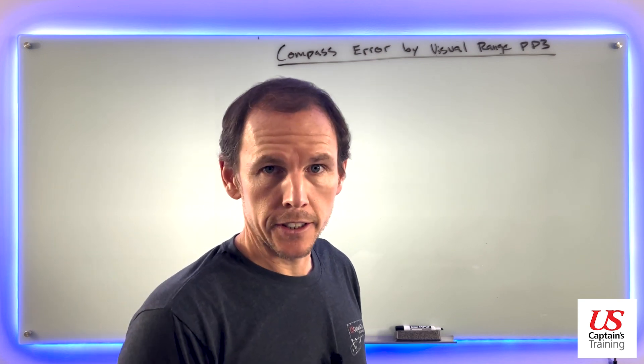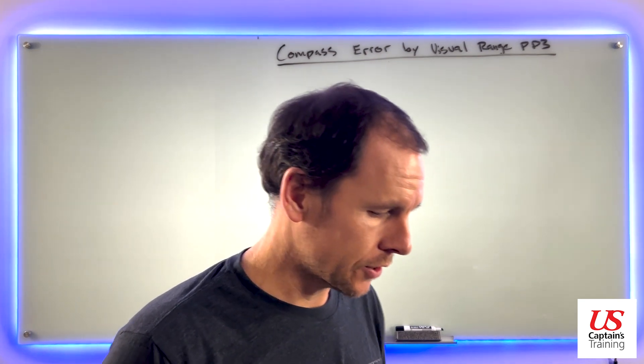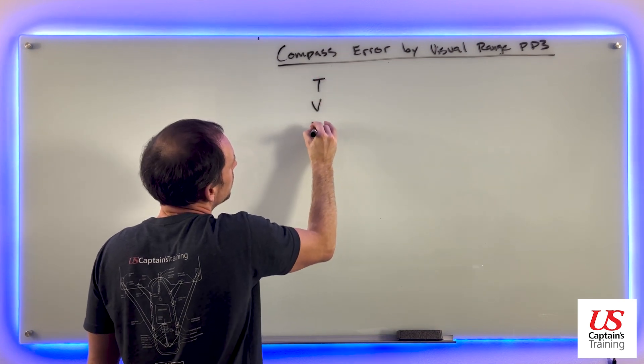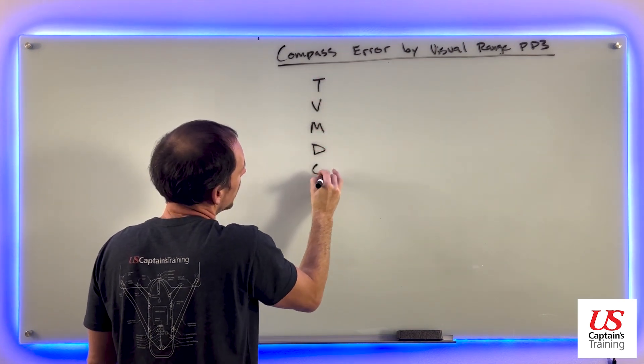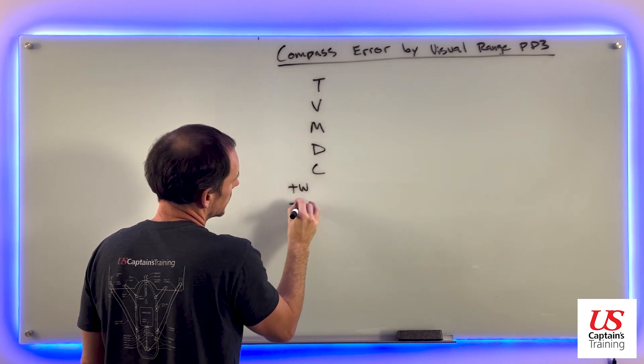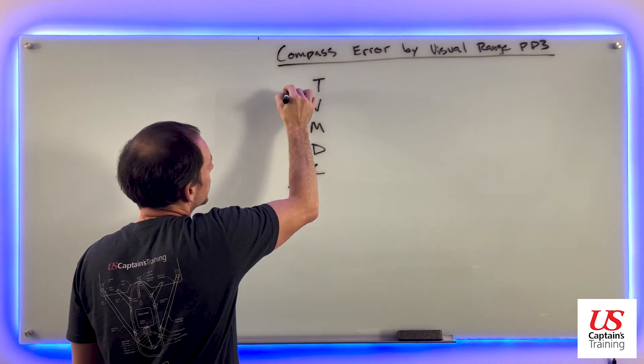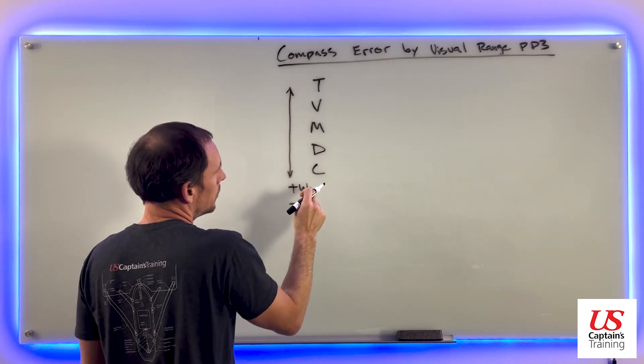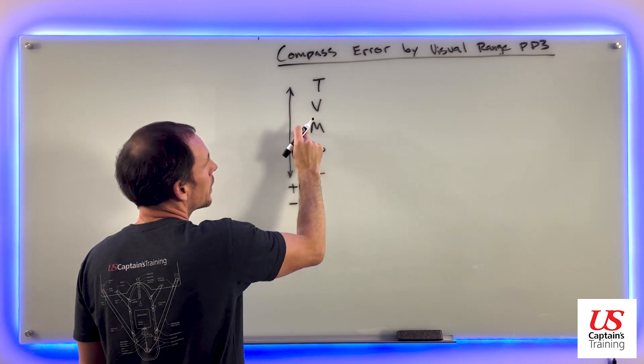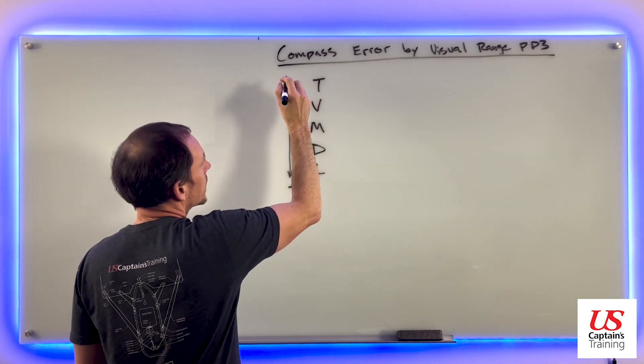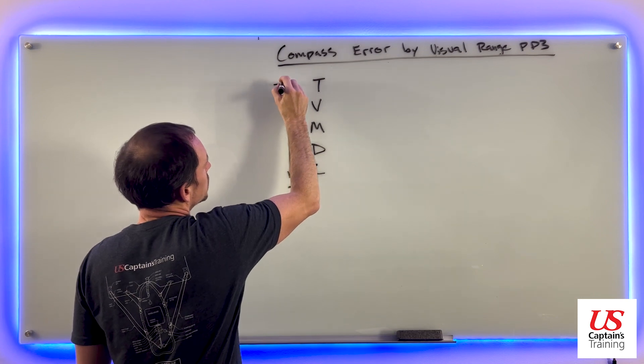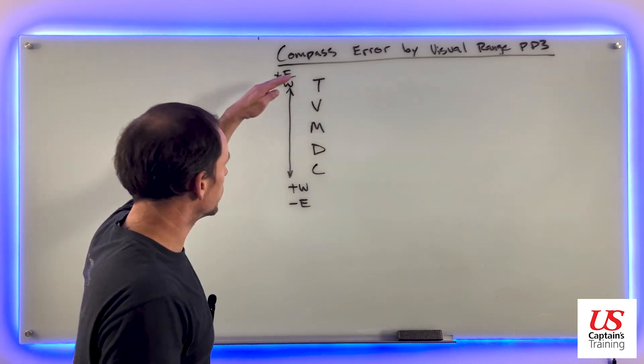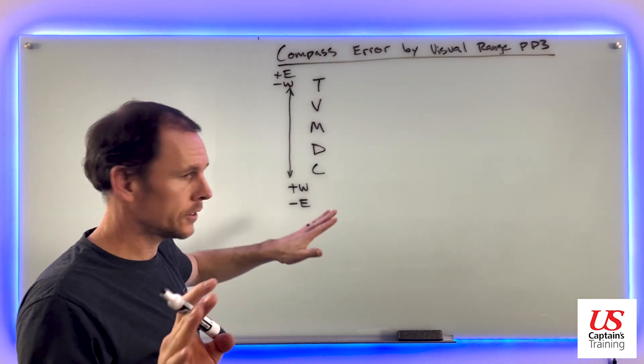It gave us all the information we need to correct our compass and find deviation. We say true virgins make dull company, add whiskey, subtract east. And that's when you're going from true down to compass. If you are going from compass to true, we say can dead men vote twice at election? So you're going to subtract west and add east. And you'll see, you can go back and forth and it all just ends up the same.